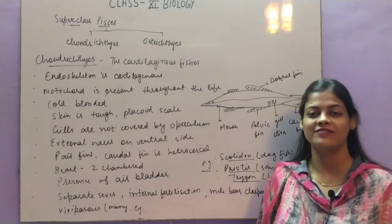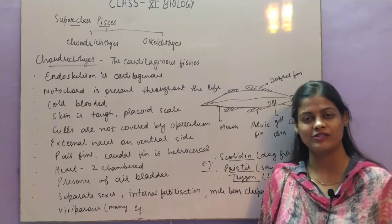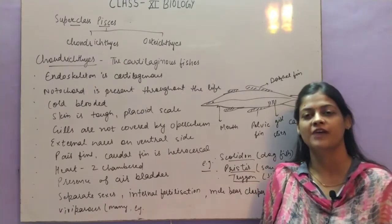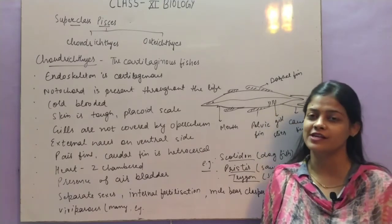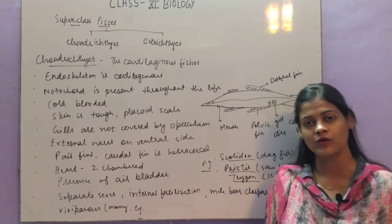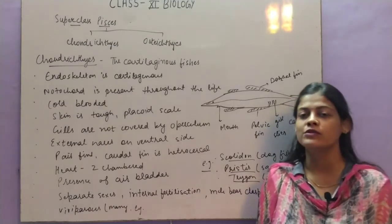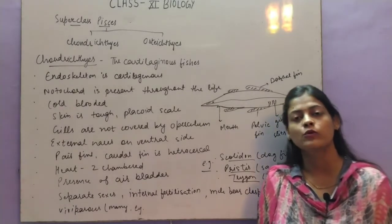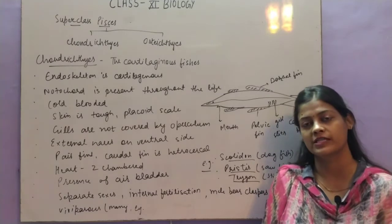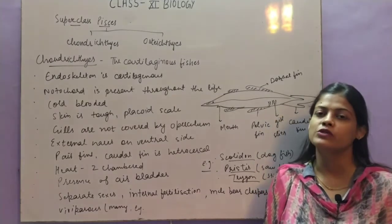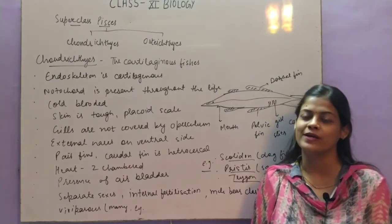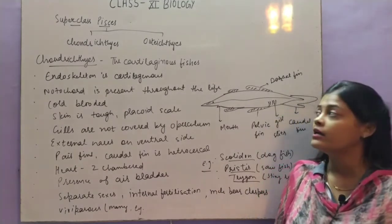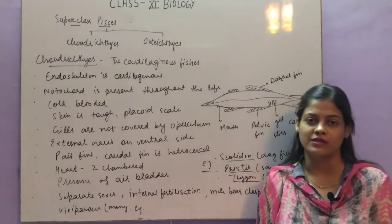Hello students, let's start with today's biology class. In the previous class we started with phylum Chordata and studied about classification of vertebrates. In vertebrates there were two sub-phyla: Agnatha and Gnathostomata. Agnatha, the jawless vertebrates, we have already studied. Now we will start with the jawed vertebrates.